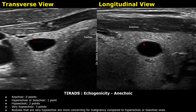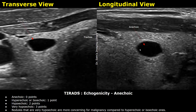The next feature in TI-RADS is echogenicity. The first category is anechoic, given zero points because it is usually less concerning. Anechoic nodules appear jet black and typically include simple cysts, casting posterior acoustic enhancement.